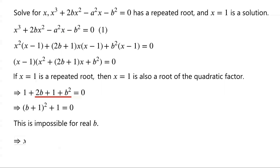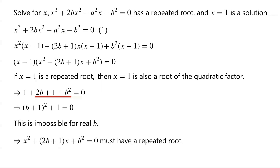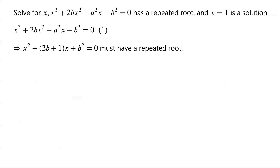This implies that the quadratic equation X squared plus (2B plus 1) times X plus B squared equals 0 must have a repeated root. Thus the discriminant of the quadratic equation must equal 0. The discriminant delta equals (2B plus 1) squared minus 4B squared. Setting it equal to 0, we have 4B plus 1 equals 0.